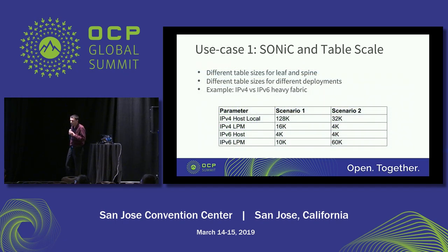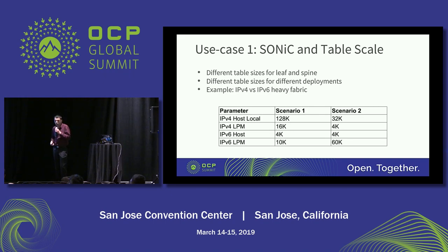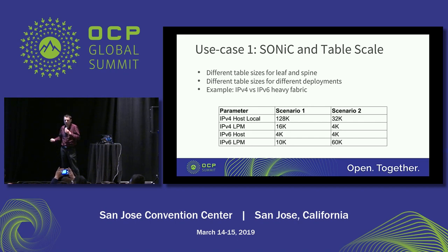Jumping to the use cases for SONiC with a programmable data plane — the first is scale. We built a profile focused on V4 routing and another focused on V6 routing. I should note these are not the maximum numbers; they're based on requirements we got from customers. Can the chip do more? Absolutely. But it's a question of what is really needed for a particular scenario — we're trying to avoid putting more than what's actually needed.